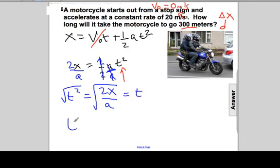The time required for this displacement based on that acceleration will be equal to 2 times 300 meters divided by the acceleration—that's 20 meters per second squared. 2 times 300 is 600, divided by 20. Take the square root of that.